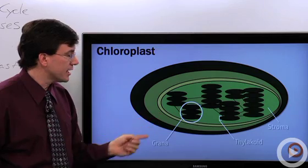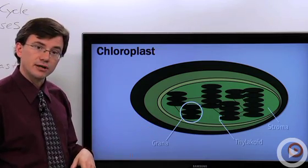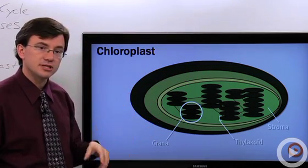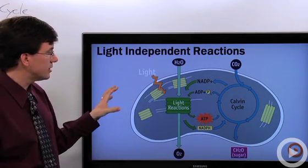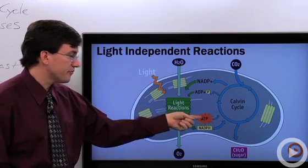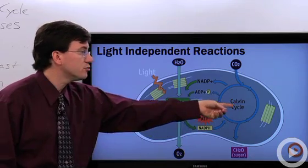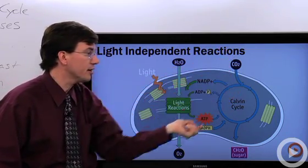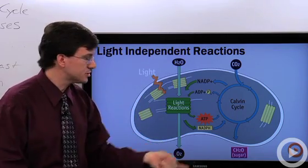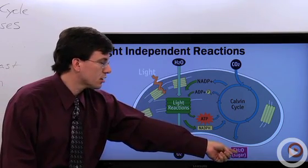Now the light dependent reactions occurred on the thylakoid membrane and they send their materials, the ATP and NADPH, to the stroma. And that's what we see going on here. So the light reactions are providing ATP and NADPH and those are being consumed by the Calvin cycle as it takes in carbon dioxide from the air, does that carbon fixation I mentioned, and spits out some sugars.